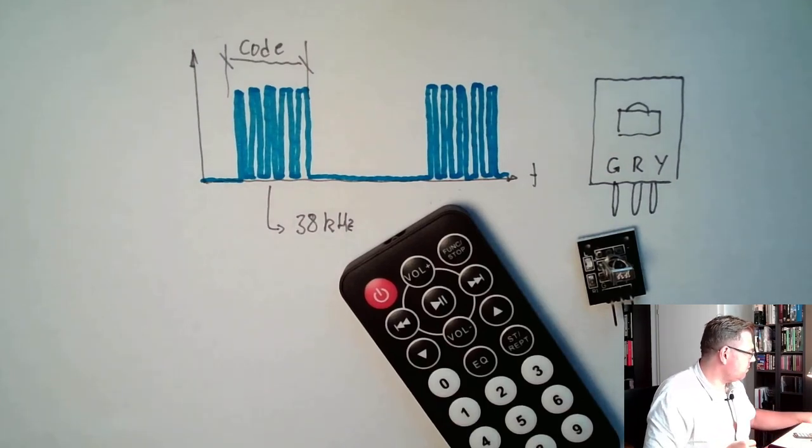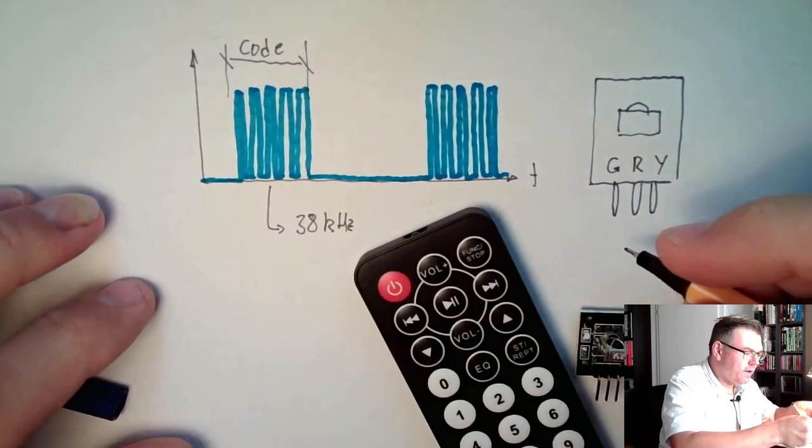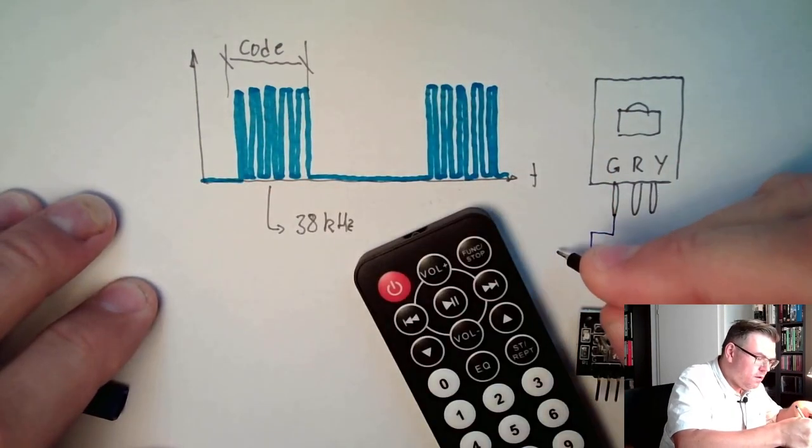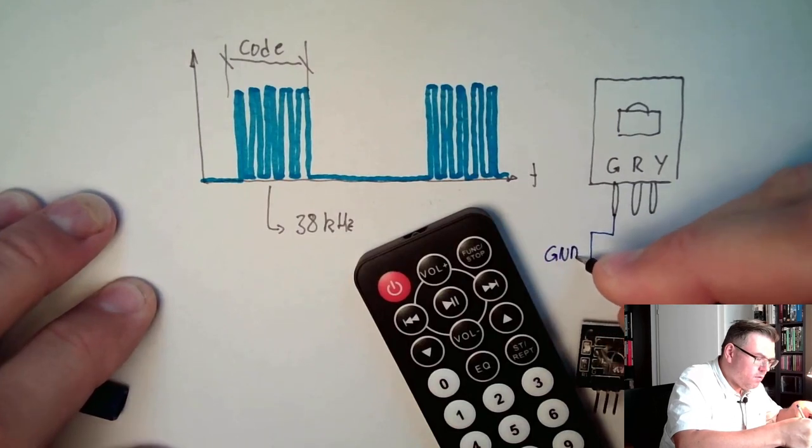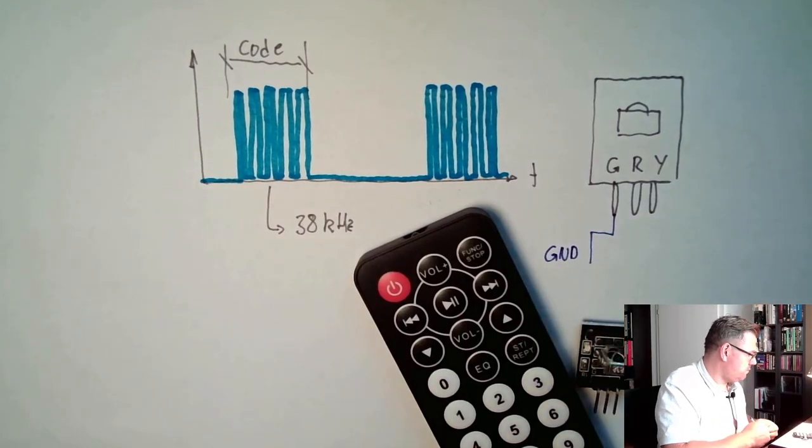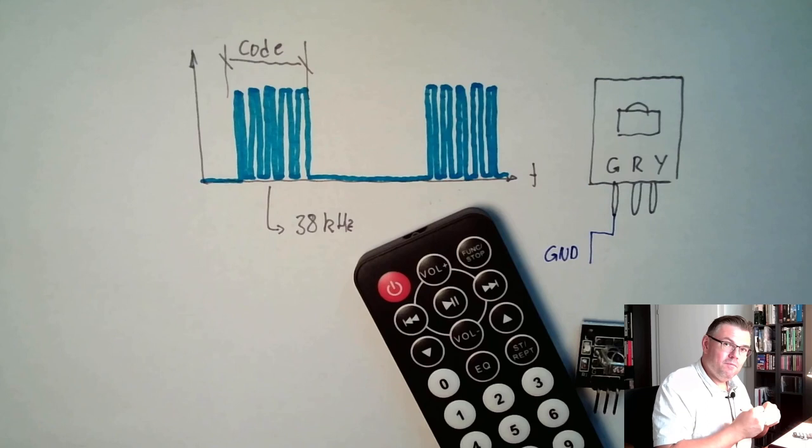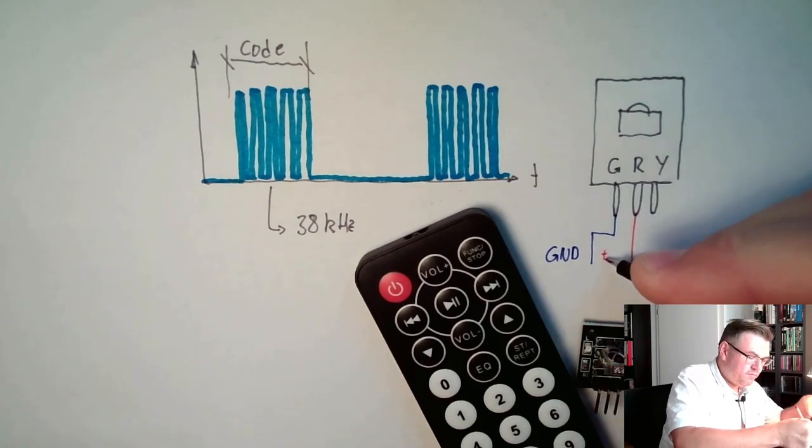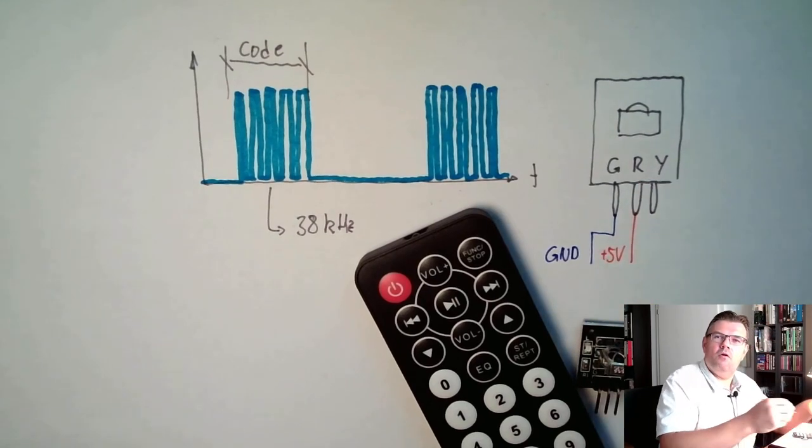G is ground. So to G we are connecting ground. R is power supply. So here we are connecting plus five volts. Red.